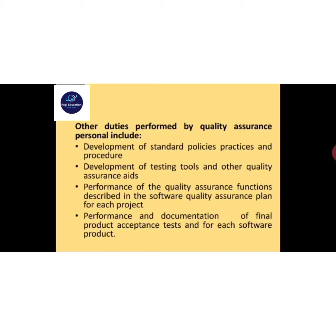Quality assurance requires tools. We need to check the tools, the software, and the testing software. We need to use tools to check the project correctly and check the quality assurance functions. Performance of the quality assurance functions described in the software quality assurance plan for each project — the functionality is described and documented.